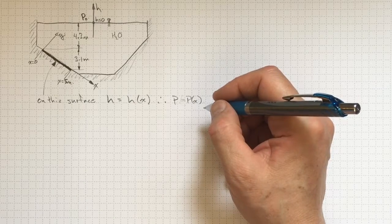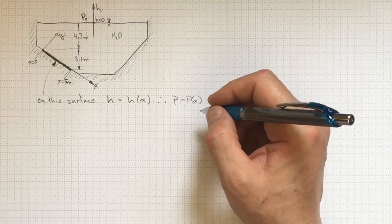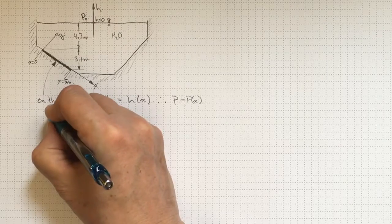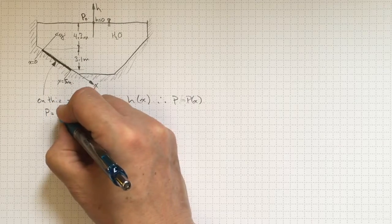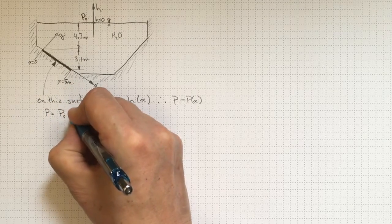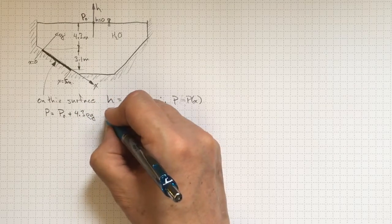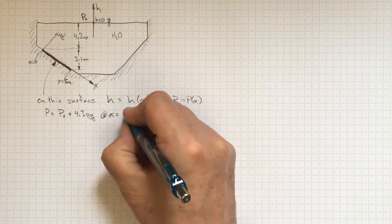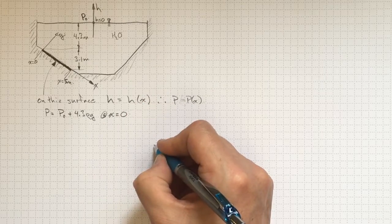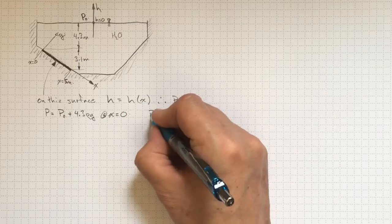So how are we going to get there? Well, let's take some observations. p is equal to p-naught plus 4.3 times rho g at the location x equal to zero.